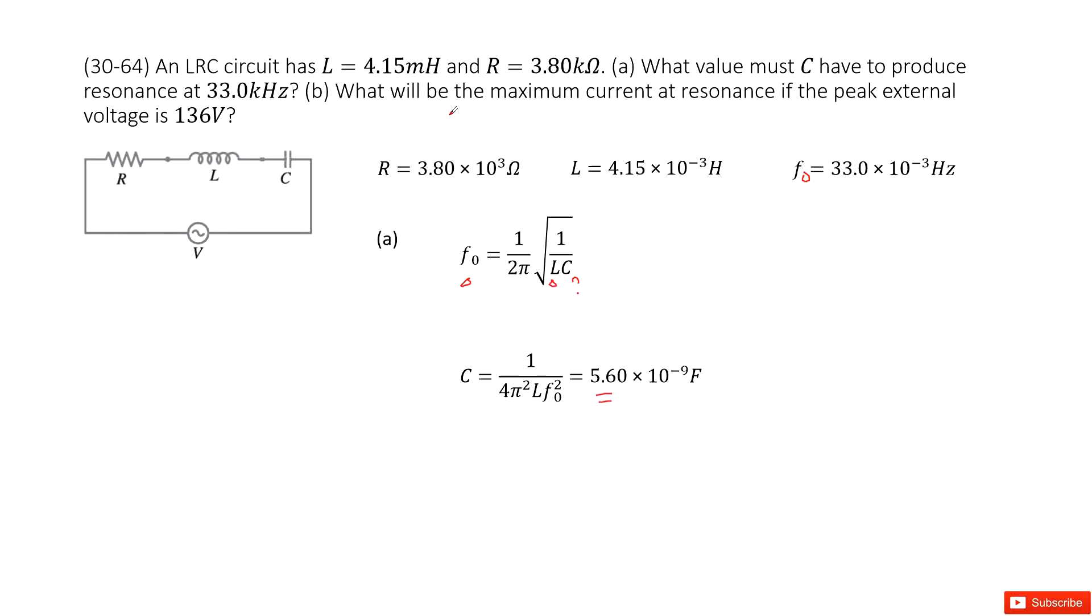Next one, what will be the maximum current, that is the peak current. At the resonance, if the peak external voltage is given as 166 volts.